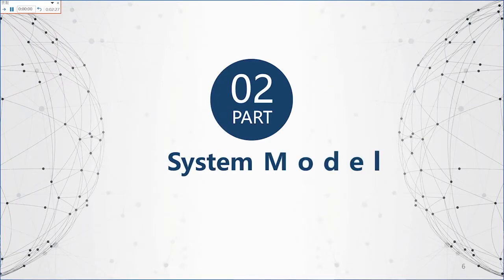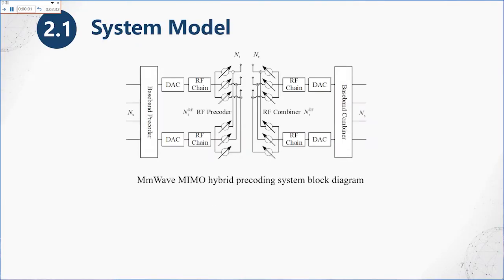The second part is the system model. As shown in the figure, the base station equipped with antennas transmits NRS data streams to the user equipment equipped with NRS antennas. There are radio frequency chains at the transmitter and receiver.